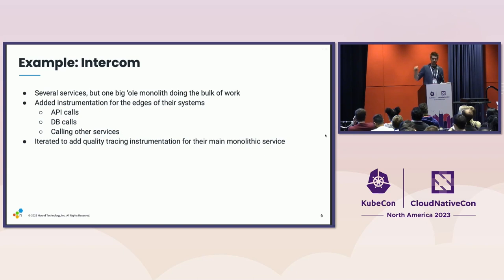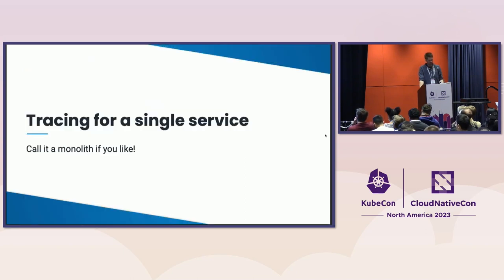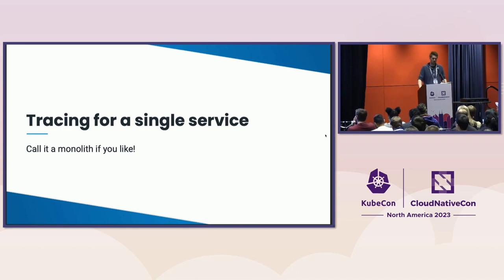Distributed tracing became a way to better understand their systems so they could improve them more effectively, rather than saying 'I kind of know what this function does but I don't know if one calls the other in this big soup of code.' Their journey took about a year — they iterated a lot, a little bit more every single week. The principles that apply to tracing a distributed service are the same you'd apply to pretty much any other service, whether it's a small service or a large monolith.